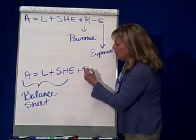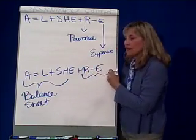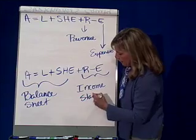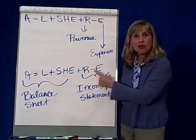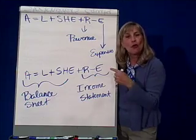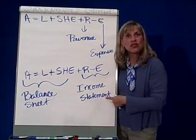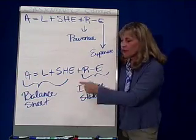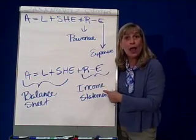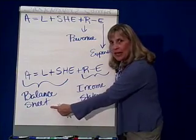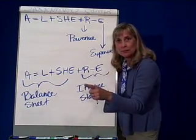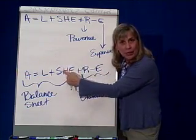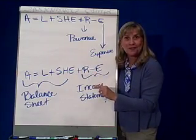Plus revenue minus expense gives you another financial statement — it's known as the income statement. The difference between revenue minus expense is your profits or net income in the business. The income statement shows you your net income or profits for the period of time — this answers the question, how'd you do this period? The balance sheet tells you the financial health at a moment in time, while the income statement tells you what's going on during the year.